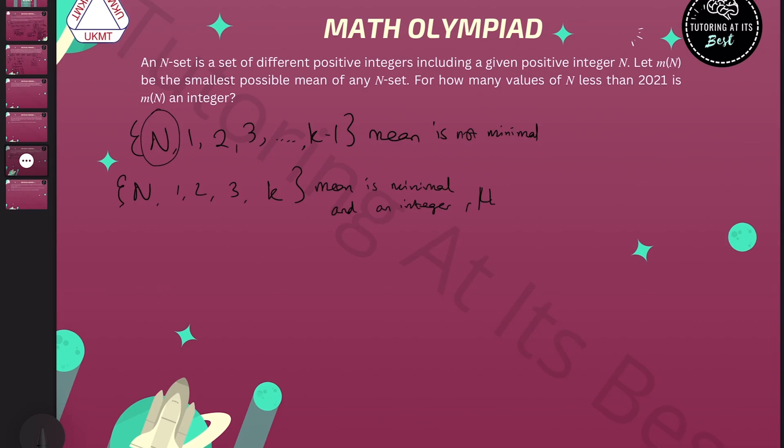This set has mean μ. If I remove k, the mean will go up. What does that mean? That means μ must be greater than k. However, if I add the next number after k, which is k plus one, this is the minimal mean, so the mean cannot get any smaller.